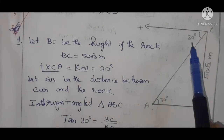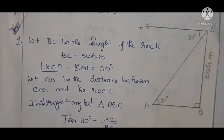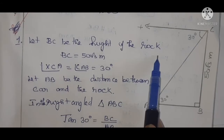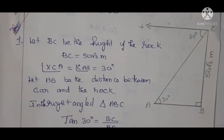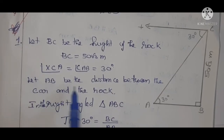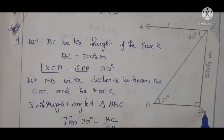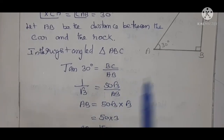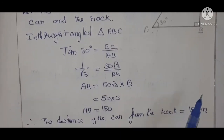Angle XCA = 30° (angle of depression). XC is parallel to AB, and AC is the transversal, so alternate angles are equal: angle CAB = 30°. Let AB be the distance between the core and the rock. In right-angle triangle ABC, tan 30° = BC / AB. So 1/√3 = 50√3 / AB. AB = 50√3 × √3 = 50 × 3 = 150 meters. Therefore, the distance of the core from the rock is 150 meters.